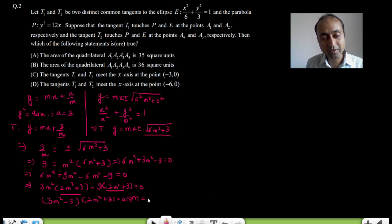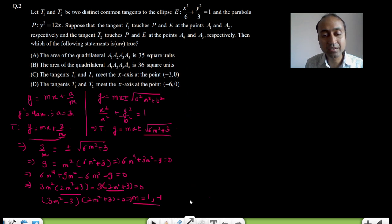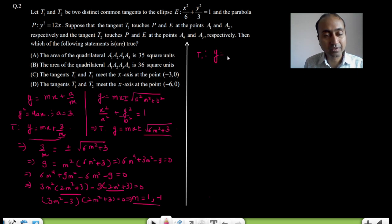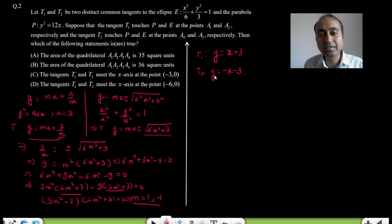The real values of m are 1 and −1. Substituting these into the tangent equation y = mx + 3/m: for m = 1 we get Tangent 1: y = x + 3, and for m = −1 we get Tangent 2: y = −x − 3.